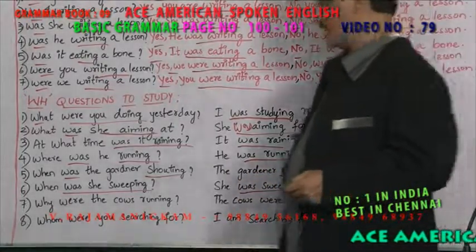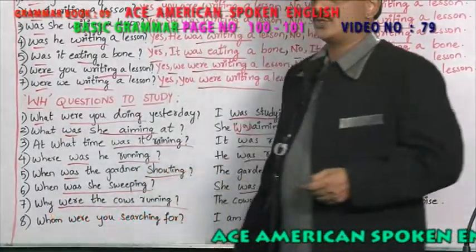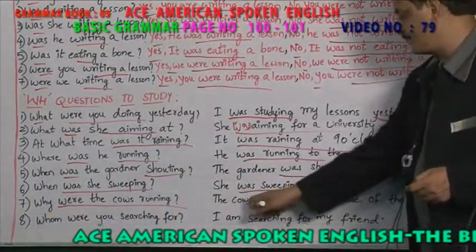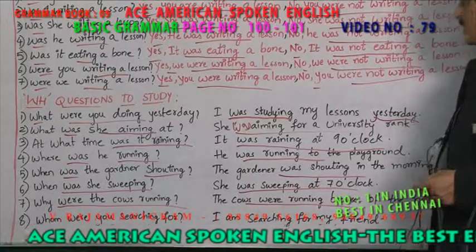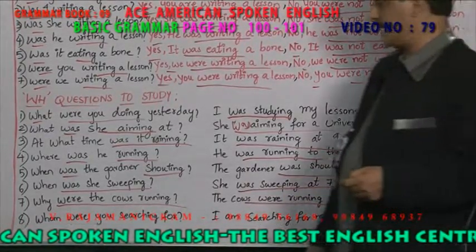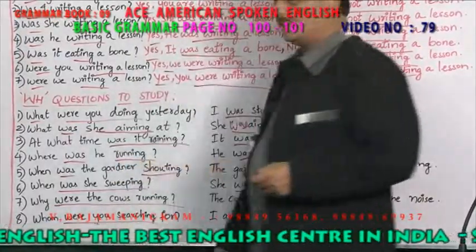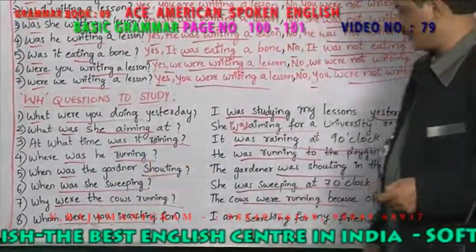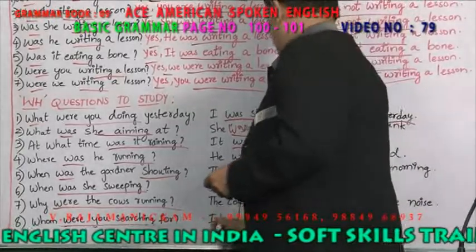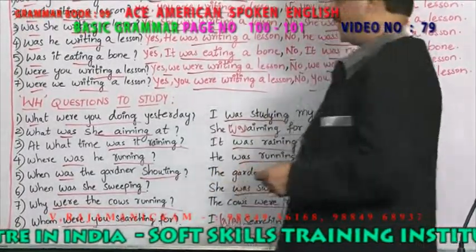Why were the cows running? The answer in past continuous: The cows were running because of the noise. Whom were you searching for? I was searching for my friends. Hope you are able to understand — are you clear about it?